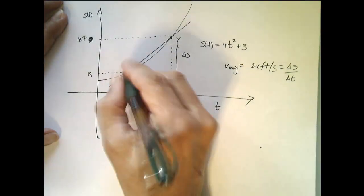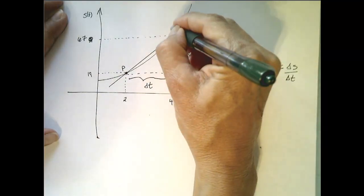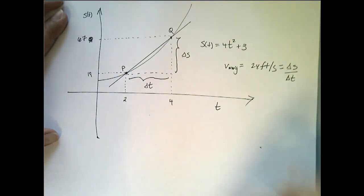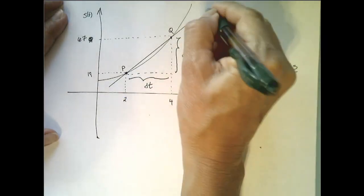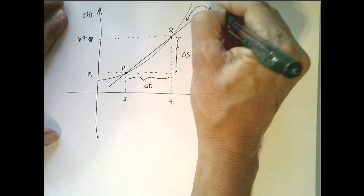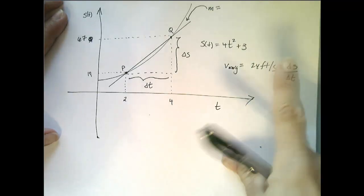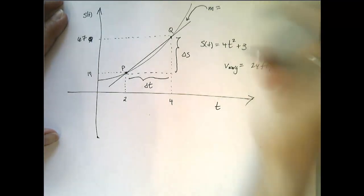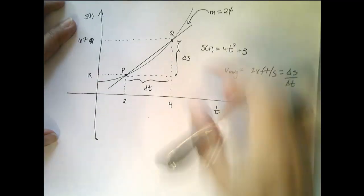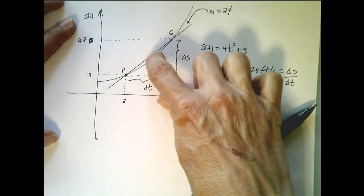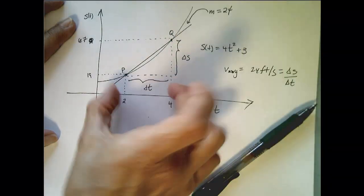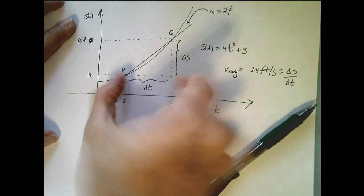And if I let this point right here be P, and this point right here be Q, then this secant line that connects P to Q has slope equal to 24 feet per second. And you should be able to see this directly. So the slope of this line right here is the change in Y over the change in X.